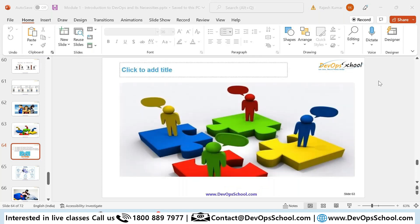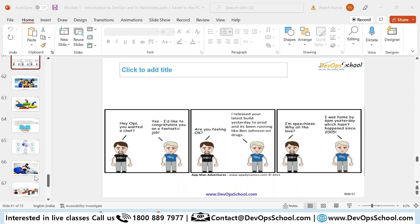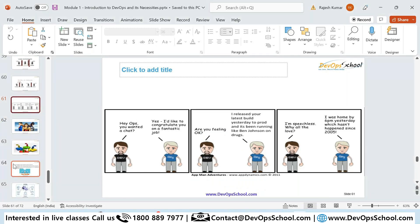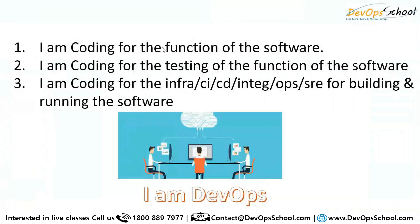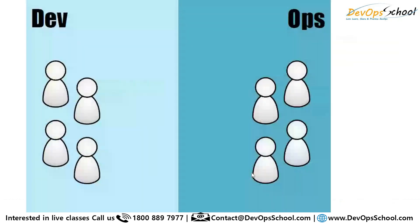In this course I'll teach you everything: how to write a function for software in Python, JUnit, JMeter, Selenium, Jacoco, unit testing, SonarQube for code quality. I'll teach you infra code like Terraform, CI with Jenkins, CD with ArgoCD, Helm, Kubernetes, Ansible, and many other tools. For running and monitoring the software: New Relic, Datadog, Splunk — name it and you have the full toolset. This is what you need to practice.